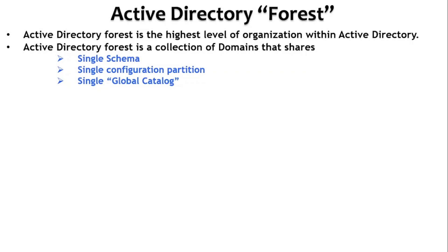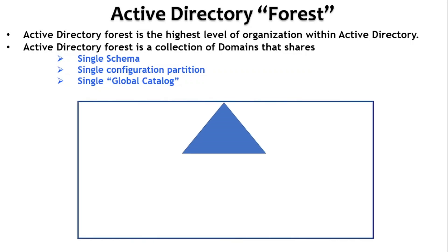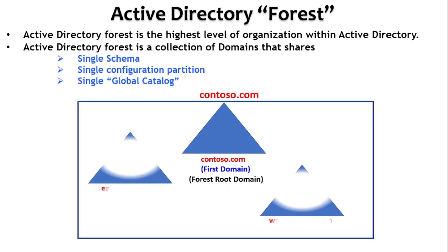An active directory forest is a collection of domains that shares a single schema, a single configuration partition, and a single global catalogue. For example, we have a domain named contoso.com, and this is the first domain in this forest, so this domain is called the forest root domain. This forest will be identified by the name of the forest root domain — the contoso.com forest.